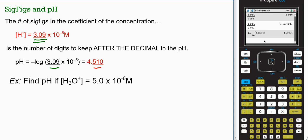So here's an example. Find pH if the hydrogen ion concentration is 5 times 10 negative 6. Notice you have 2 sig figs here. How many digits did you have after the decimal in pH? 2. So here we go.